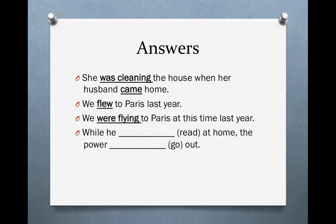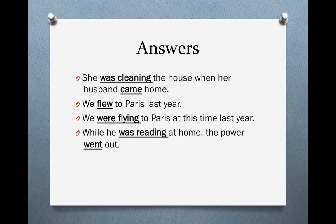And the last one: 'While he was reading at home, the power went out.' The presence of 'while' tells us we need to use the past progressive — that action was happening before, during, and after the power going out. The power went out at a specific time, so we use the simple past.